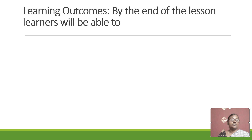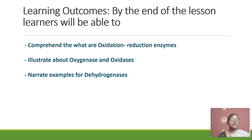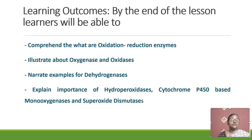Learning outcomes: by the end of the lesson, the learners will be able to comprehend what oxidation reduction enzymes are, what they catalyze, illustrate about oxygenases and oxidases, narrate examples of dehydrogenases and its types, and explain the importance of hydroperoxidases, cytochrome P450 based monooxygenases, and superoxide dismutases.